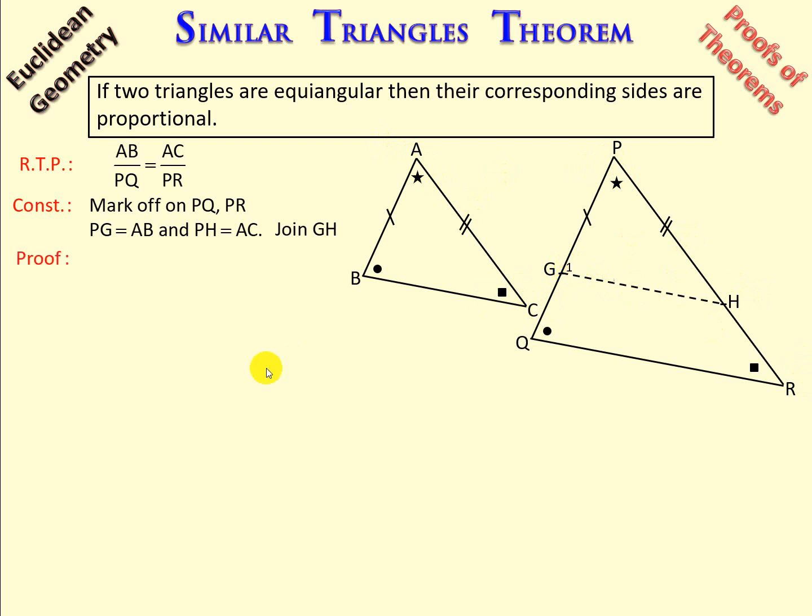So moving on to our proof, you will notice I've cut out a smaller triangle, and what I want to do is prove that this triangle that I cut out, PGH, is congruent to triangle ABC, and I think you can see that angle A is equal to angle P.